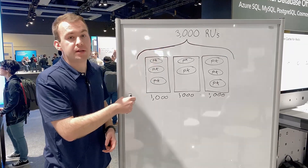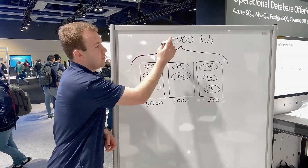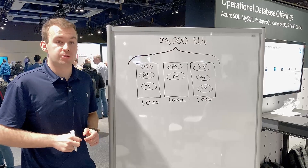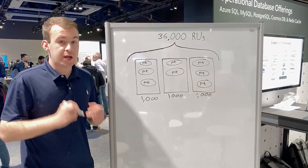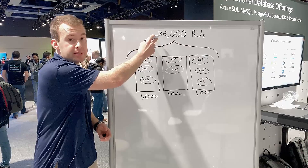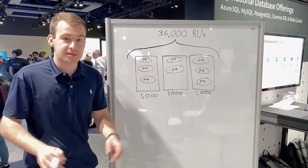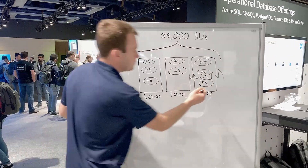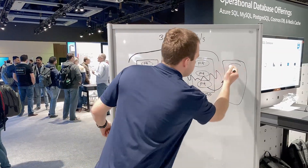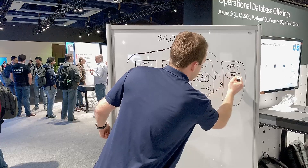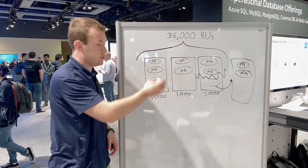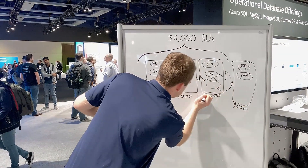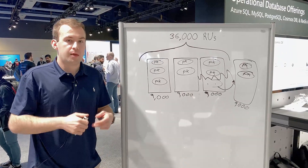In many cases, you might need to scale up by a very significant number — say from 3,000 all the way up to 36,000. Each individual physical partition can have up to 10,000 RUs allocated to it, so in that example 3 physical partitions would not be enough to accommodate 36,000 RUs. What Cosmos DB does behind the scenes — with absolutely no impact to your production workload, it all happens automatically — is we split one of the existing physical partitions and create another one with a subset of the split partition's data. So if we had 1,000 RUs per partition before, now we have four partitions with 9,000 RUs on each physical partition in that example. This all happens behind the scenes automatically.